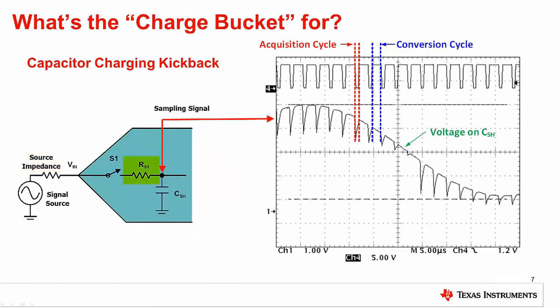This slide shows a signal source directly connected to a SAR data converter switched capacitor input. Notice that the signal source has a source impedance, and that the internal switch has an associated impedance. When the sampling switch S1 closes, the internal sample and hold capacitor needs to charge to the level of the signal source. However, the signal source is not capable of quickly charging the internal capacitance because of the source resistance.